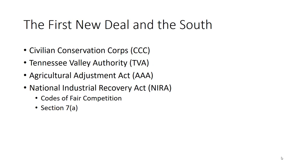The National Industrial Recovery Act attacked manufacturing and service industries from a similar perspective — that oversupply had led to cutthroat pricing. Industries were encouraged to form trade associations and write codes of fair competition that established prices and wages and prohibited various practices. Section 7a of the NIRA maintained that to be approved, all codes had to recognize the right of workers to organize. This led to a unionizing and strike boom in 1934. In the south, coal and iron mining and textile manufacturing were most affected by both the codes of fair competition and especially the Section 7a language. By the time the Supreme Court declared the NIRA unconstitutional in 1935, the American South remained the most obvious economic problem in the United States.